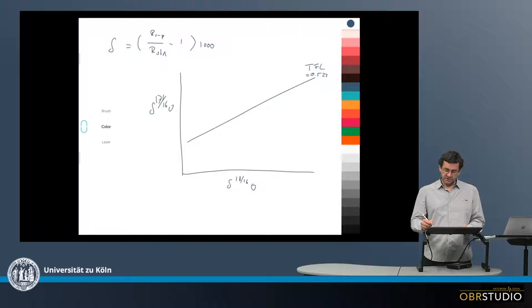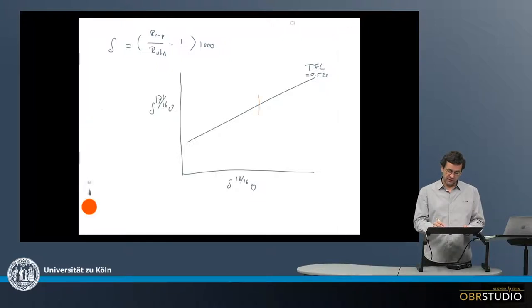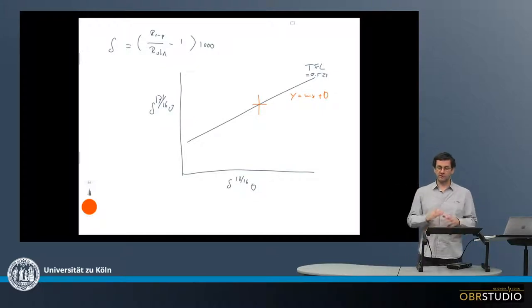The equation of this slope, as it goes through the origin here by definition, is y equals mx plus 0. Because it's going through the origin, there's no y-axis intercept.